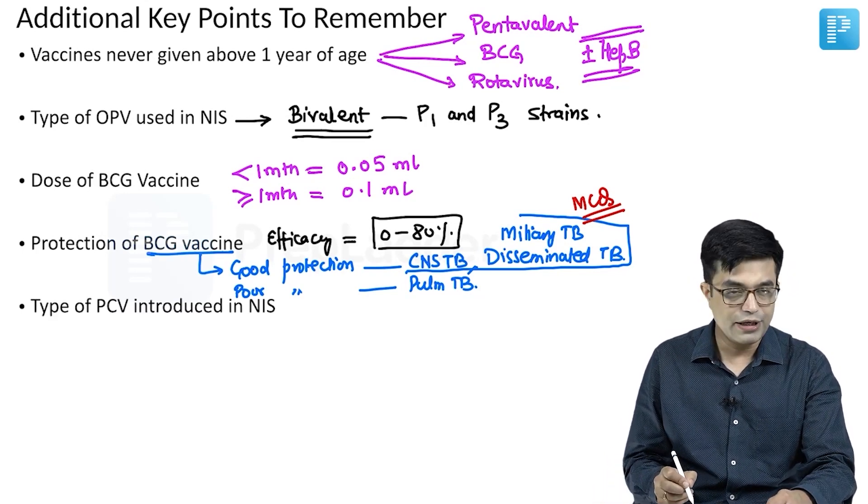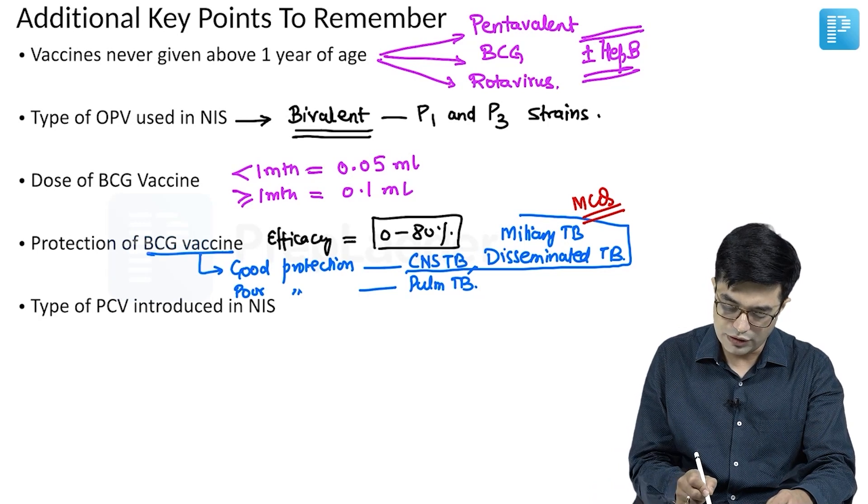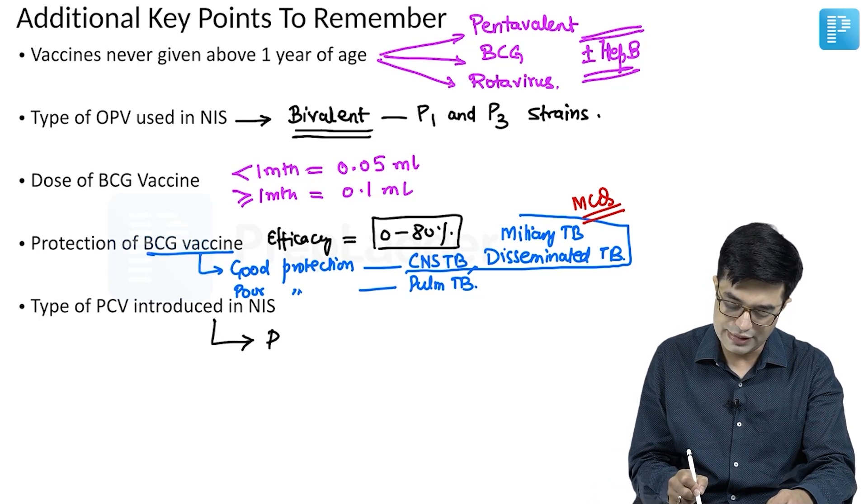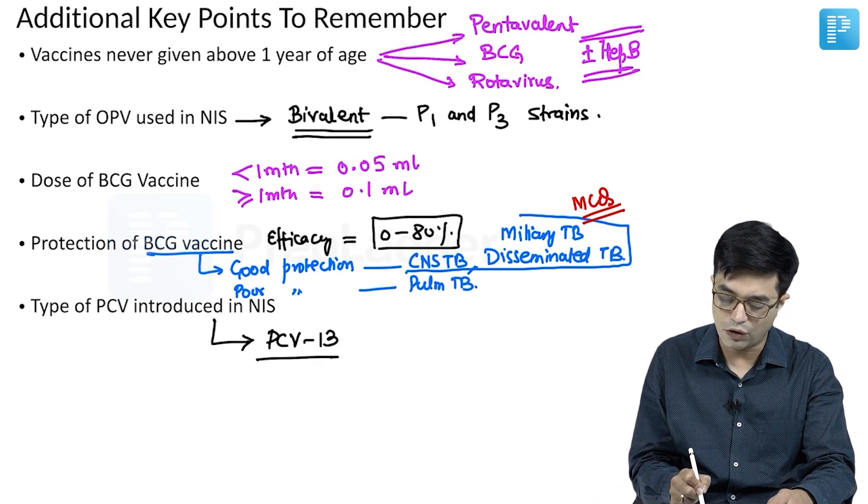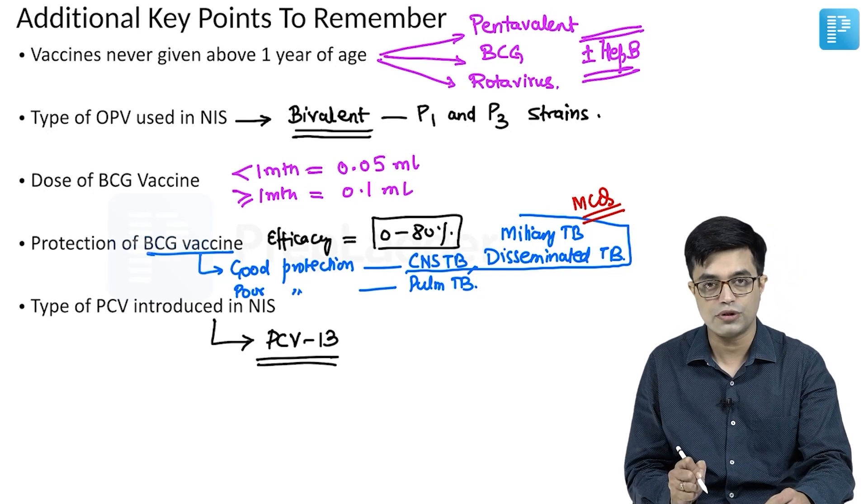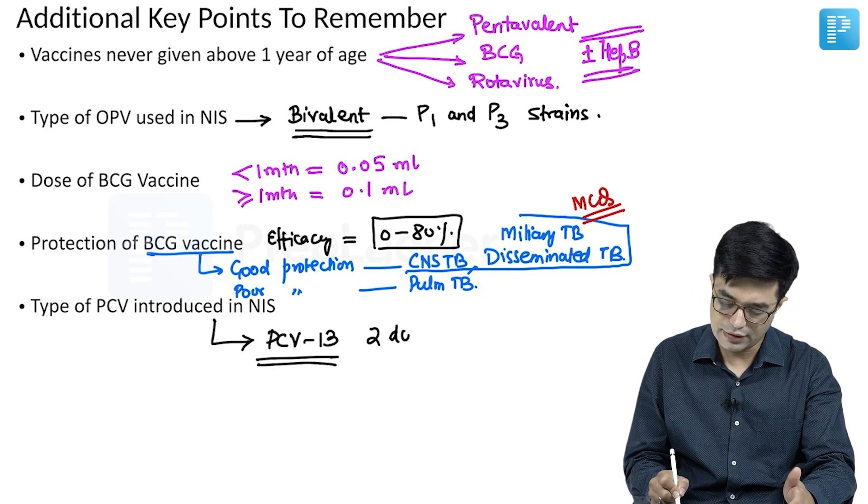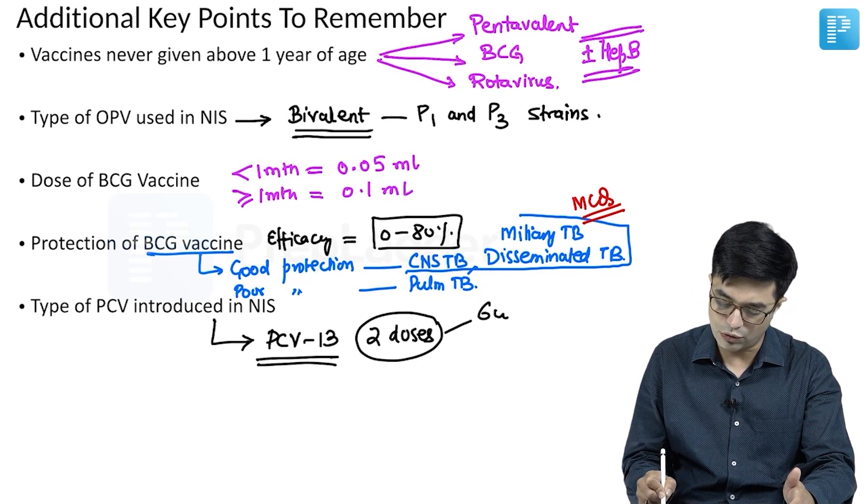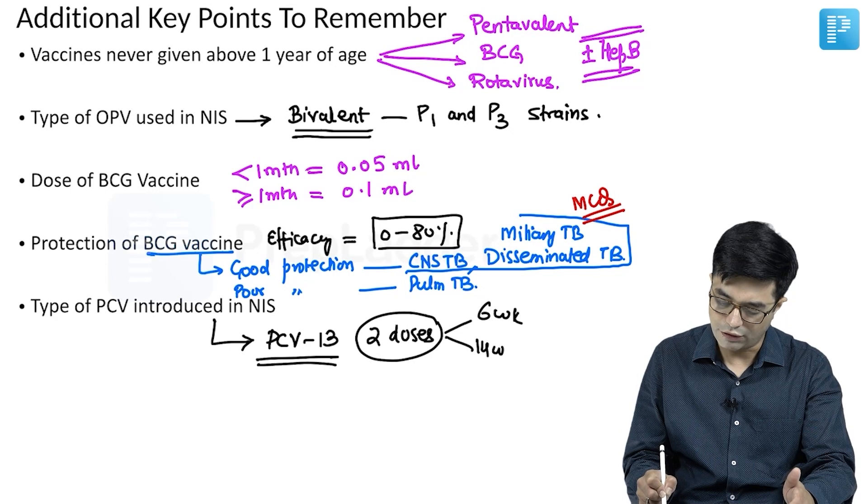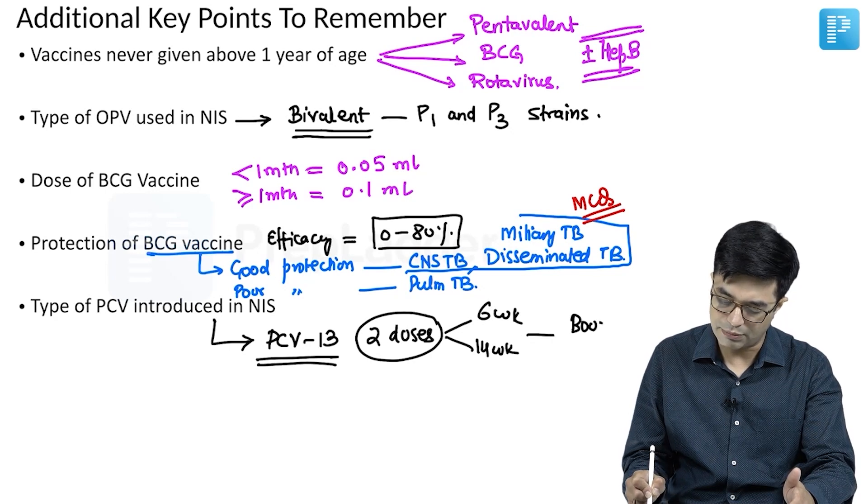What is the type of PCV which has been introduced in NIS? The type of PCV introduced is PCV13. The 13-valent form of PCV has been introduced. The regime we follow is two doses given at 6 weeks and 14 weeks, followed by a booster at 9 months.